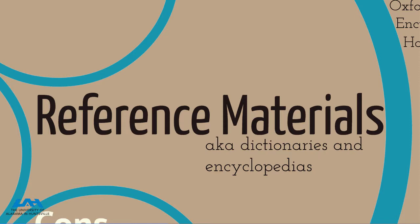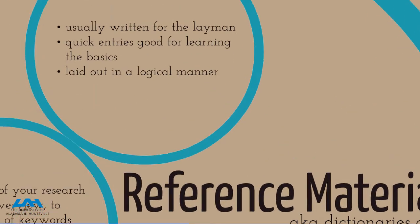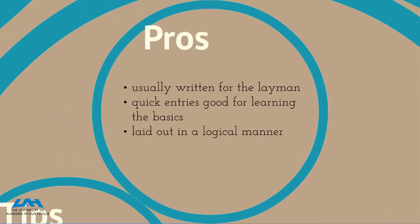Now we're going to take a look at reference materials — these are the dictionaries and the encyclopedias. The pros are they're basic material usually written for the layman, they have quick entries, they're good for learning the basics, and they tend to be laid out in a logical manner.